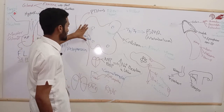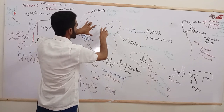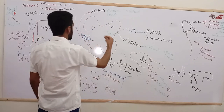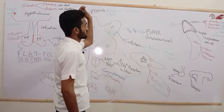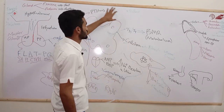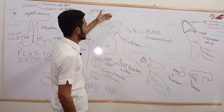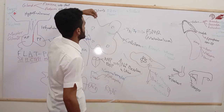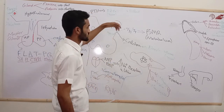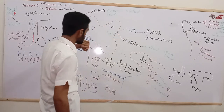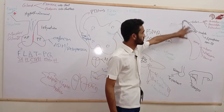Parathormone is secreted by the parathyroid glands — four oval-shaped structures present on the thyroid gland. Parathyroid hormone takes calcium from bones and puts it back into the blood, decreasing bone calcium levels. This is why osteoporosis is related to parathyroid hormone — it causes bone resorption.